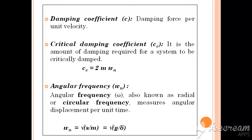To control the amplitude of vibration in every cycle, dampers are used in systems. The damping coefficient is defined as the amount of damping force produced per unit velocity provided to the system by the damper. The unit for damping coefficient is Newton per meter per second, and its notation is C.